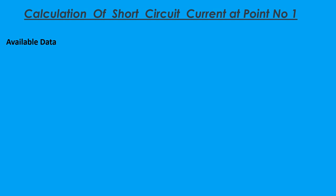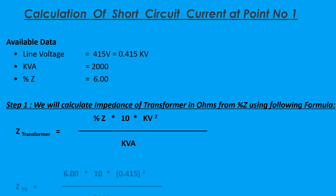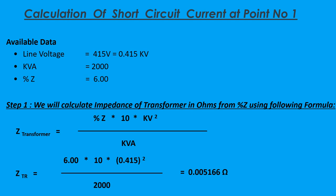For calculation of short circuit current at Point No.1, available data: line voltage is equal to 415 V (0.415 kV), KVA is equal to 2000, and percentage impedance is 6%. Step 1: We will calculate impedance of transformer in ohms from percent impedance using the following formula. Z transformer is equal to percentage Z multiplied by 10 and kV squared, divided by kVA. Therefore Z transformer is equal to 0.005166 ohms.